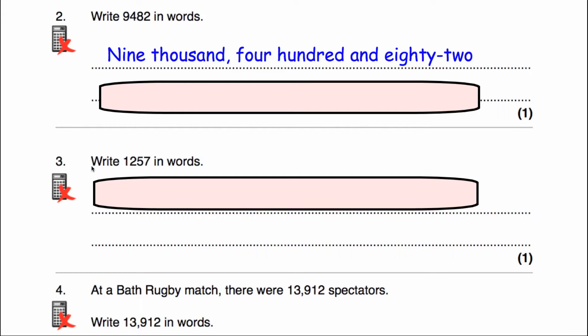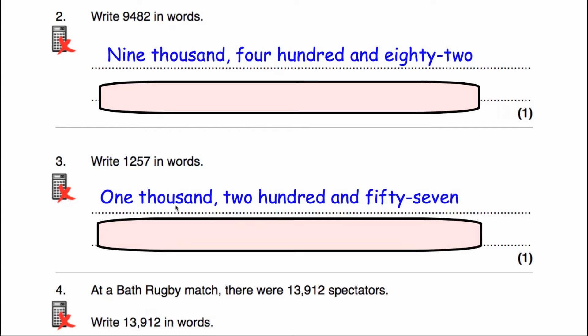In question 3 we've been asked to write the number 1257 in words. That's 1,257: one thousand, two hundred and fifty-seven.